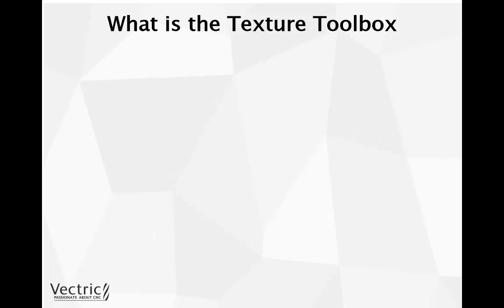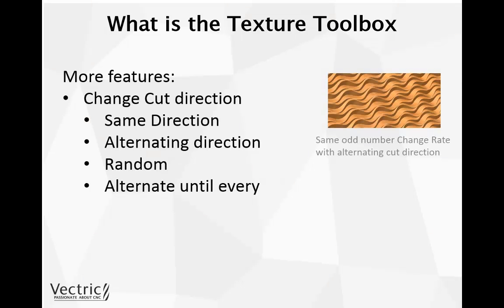We went ahead and added even more features to add more variety to our texturing toolpaths. We added the ability to change cut direction. If we cut in the same direction, the tool cuts each vector from left to right or right to left. Then we have the ability to choose alternating direction, so the tool will cut one vector from left to right, then the one underneath from right to left and vice versa. We also have random, where the software itself will choose which direction to cut the next line, or we can alternate until every specified number.